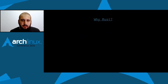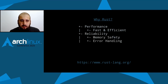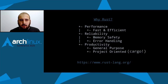So why Rust? I'll be covering some of the reasons why we should prefer Rust. First is performance — Rust is blazing fast and memory efficient with no runtime or garbage collector. It's reliable because its type system and ownership model guarantee memory safety and thread safety, enabling you to eliminate many bugs at compile time. Rust is a general-purpose language appropriate for any type of programming. It's project-oriented with an integrated build system and package manager called Cargo, which comes with great tools like an auto-formatter and lint checker. Lastly, it's well-supported with a wide community and great documentation.